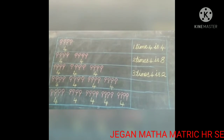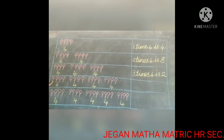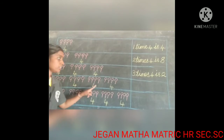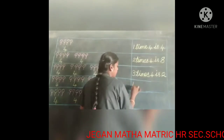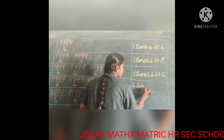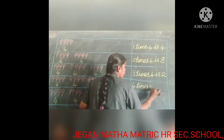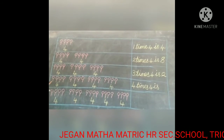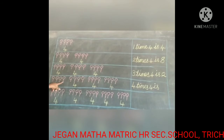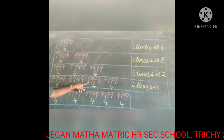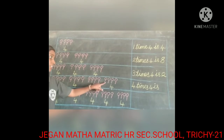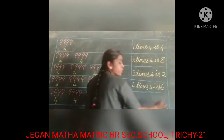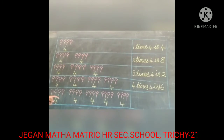Now look at the next box. How many times did 4 come? 1, 2, 3, 4 — four times. So write it here: 4 times 4 is... Count all lollipops in the fourth box: 1, 2, 3, 4, 5, 6, 7, 8, 9, 10, 11, 12, 13, 14, 15, 16. So 4 times 4 is 16.